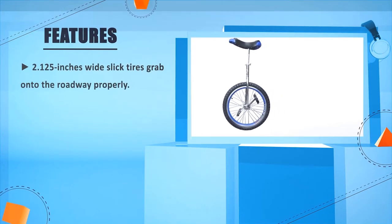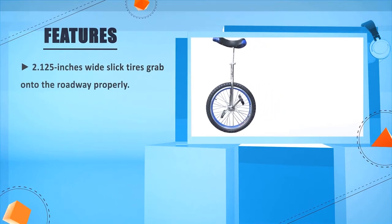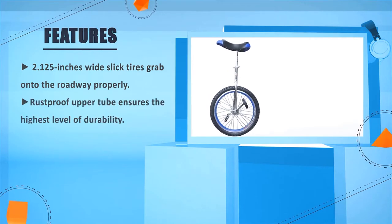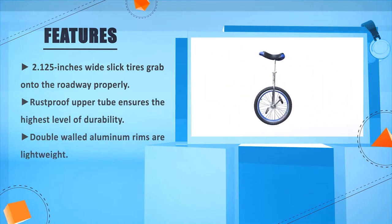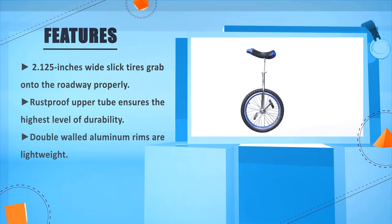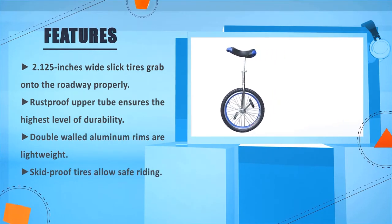2.125 inches wide slicked tires grab onto the roadway properly. Rust proof upper tube ensures the highest level of durability. Double balled aluminum rims are lightweight. Skid proof tires allow safe riding.